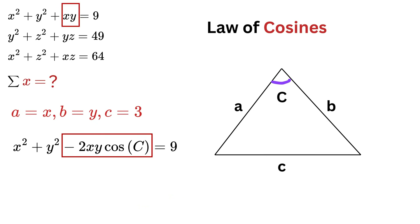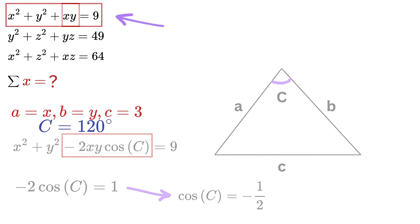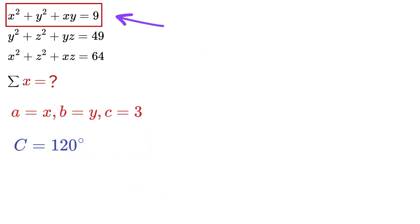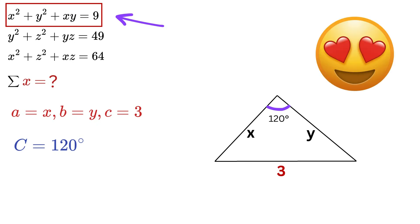So equate both to get -2 cos C = 1, or cos C = -1/2, which means angle C = 120°. Thus we can represent this equation using this triangle. Whoa, that is simply beautiful!